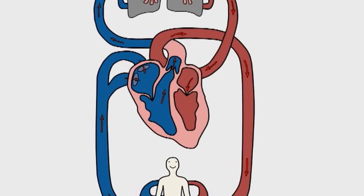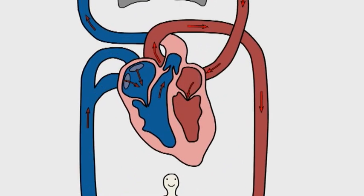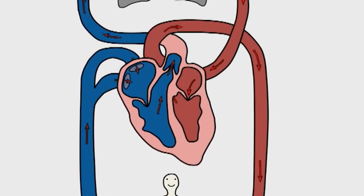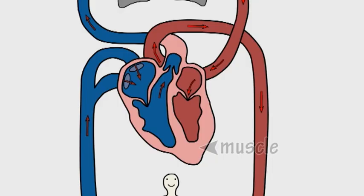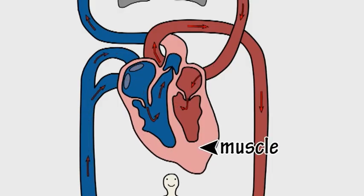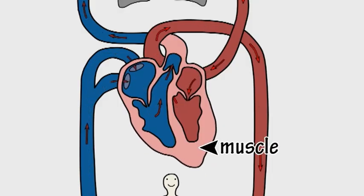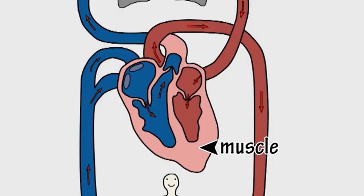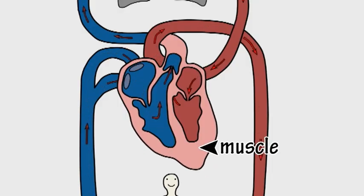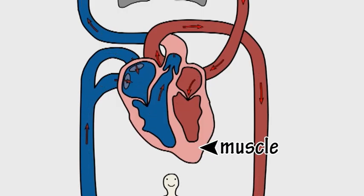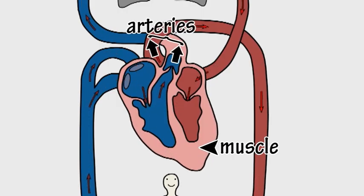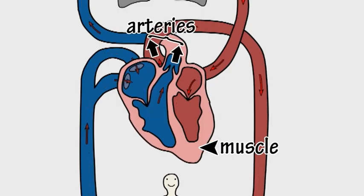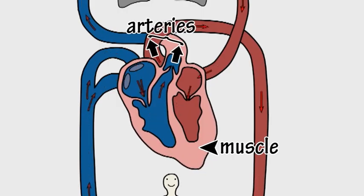The reason the heart can pump blood is that it is hollow with walls made of powerful elastic muscle which can contract, squeezing the blood inside, out through connected hollow tubes which are the arteries.